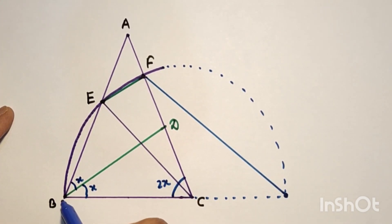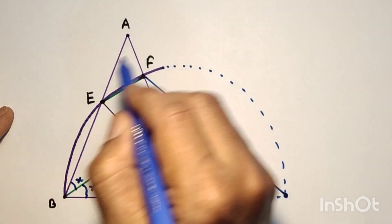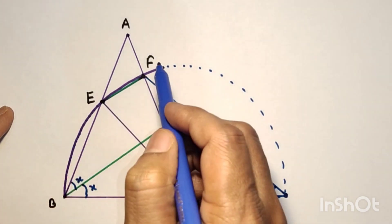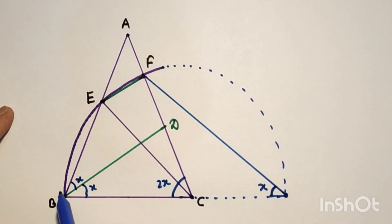Since this is 2X, this arc BC subtends 2X at the center. So this arc BF subtends half of this angle at the circumference, so this angle will be X, because arc BF subtends 2X, so it will subtend only half of the central angle at the circumference.